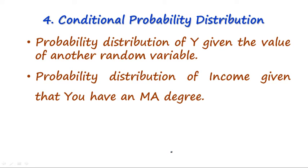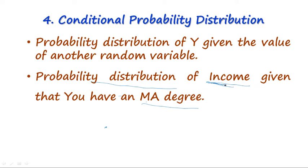One important concept in this context is the conditional probability distribution. The conditional probability distribution is the probability distribution of a random variable where the values of another random variable are conditioned on a subset. For example, with two variables — income and education in years — we can find the probability of income being in a certain range given that you have an MA degree or 16 years of education.